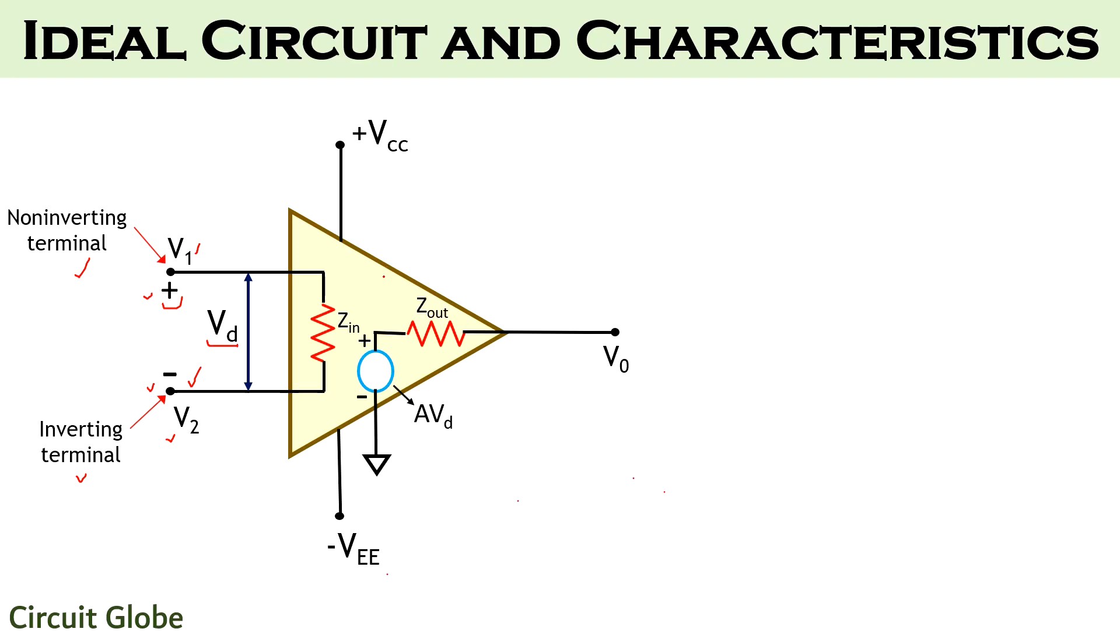We have already discussed that the gain of this amplifier is A and so the output signal which we will get will be the product of the voltage difference of the two applied inputs and the voltage gain of the amplifier. We can write this as A times (V1 minus V2) which represents the difference of the two input signals.